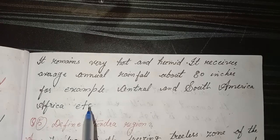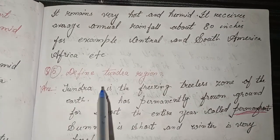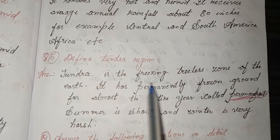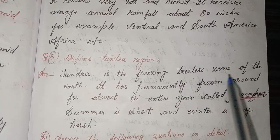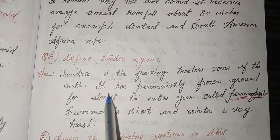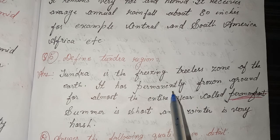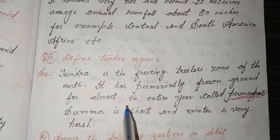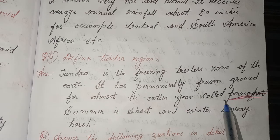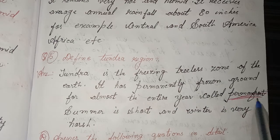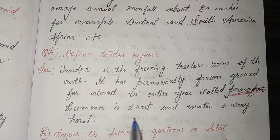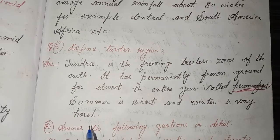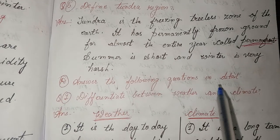Fifth, define tundra regions. Answer: Tundra is the freezing, treeless zone of the earth. It has permanently frozen ground almost the entire year, called permafrost. Summer is short and winter is very harsh.